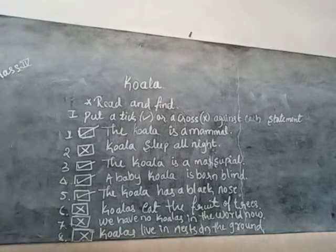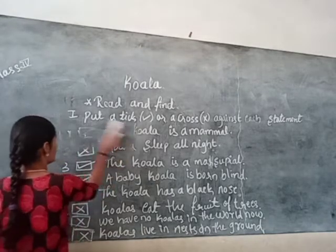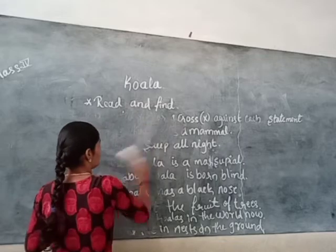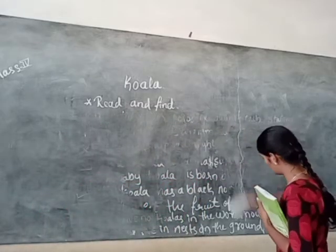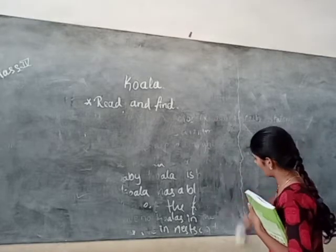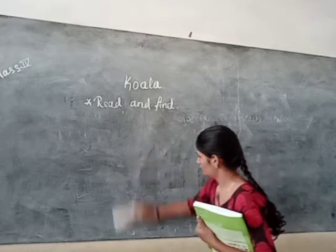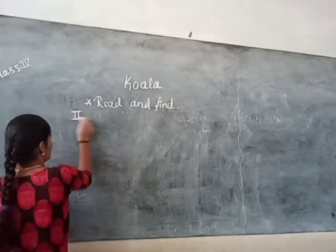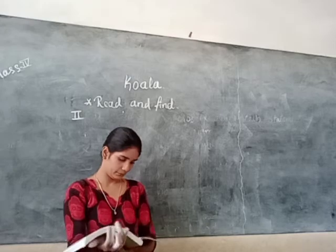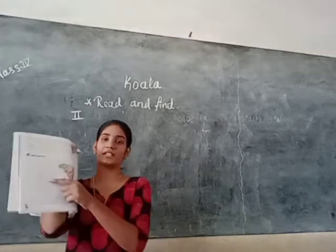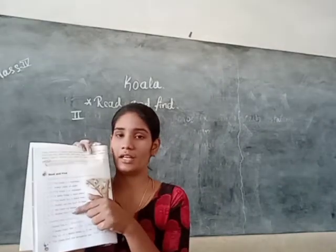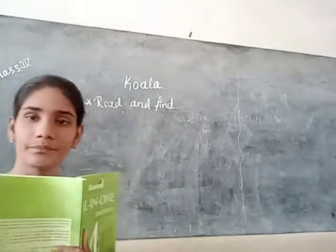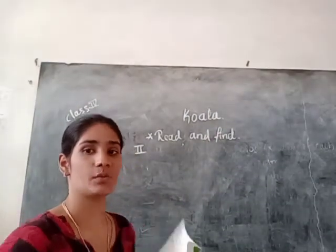Okay, let us move to the next. We have completed the tick/cross activity. Now we have activity two: complete these sentences. Here some sentences are given with blanks. By writing the correct word, we have to complete the sentence.